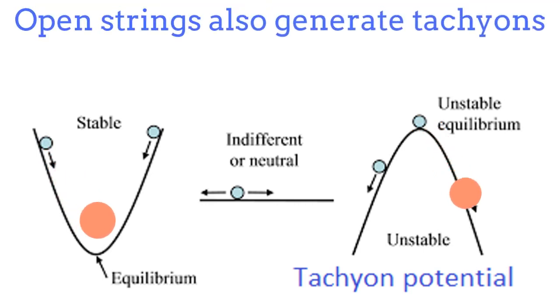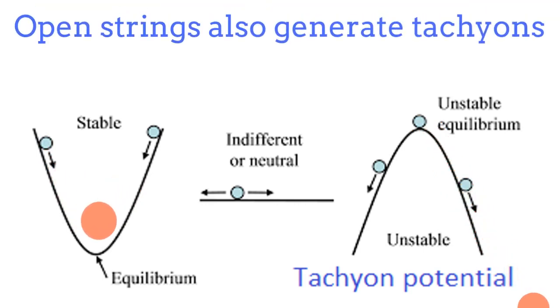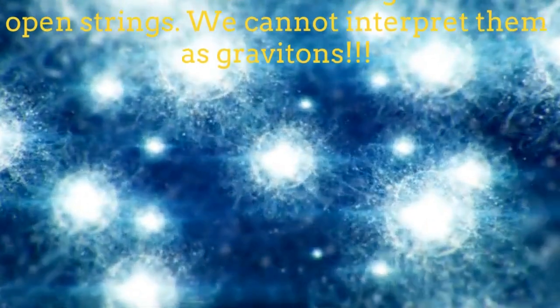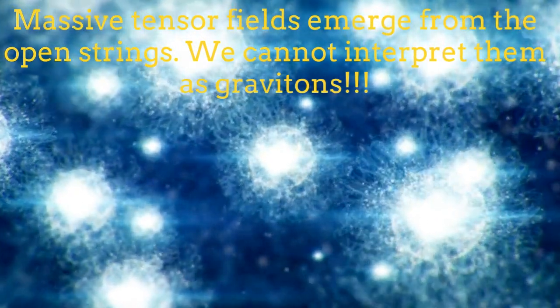Besides the Maxwell field, open strings generate tachyonic particles which correspond to instabilities of the theory. Additionally, when open strings are quantized, they contain massive tensor fields.